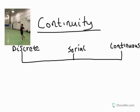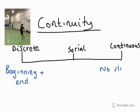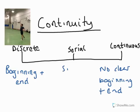Here we go on our third continuum — the continuity continuum — and there are three possibilities. Is this a continuous activity, therefore repetitive and rhythmical? Is it a discrete activity, with a clear beginning and end? Or is it a series of discrete elements, which we call a serial skill? On discrete, the beginning and end is clear. On continuous, there is no clear beginning and end. On serial, we have a series of discrete elements linked together.